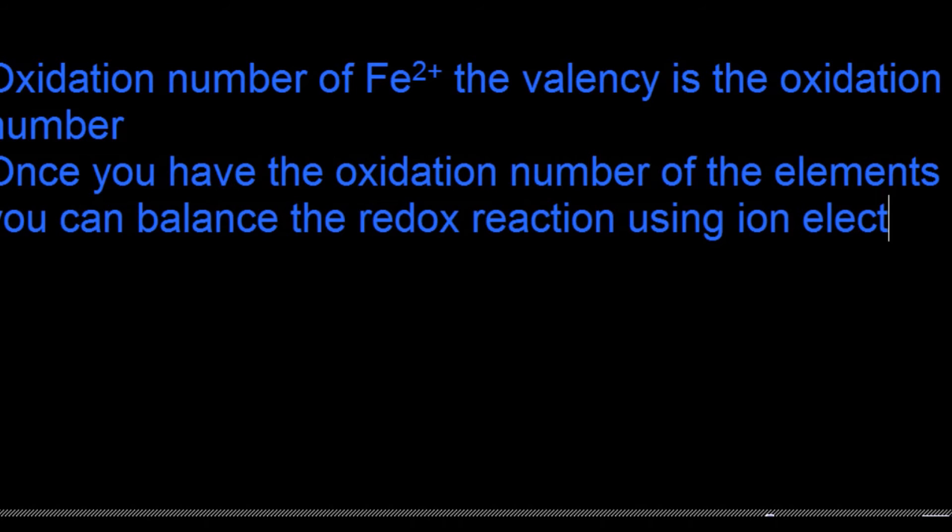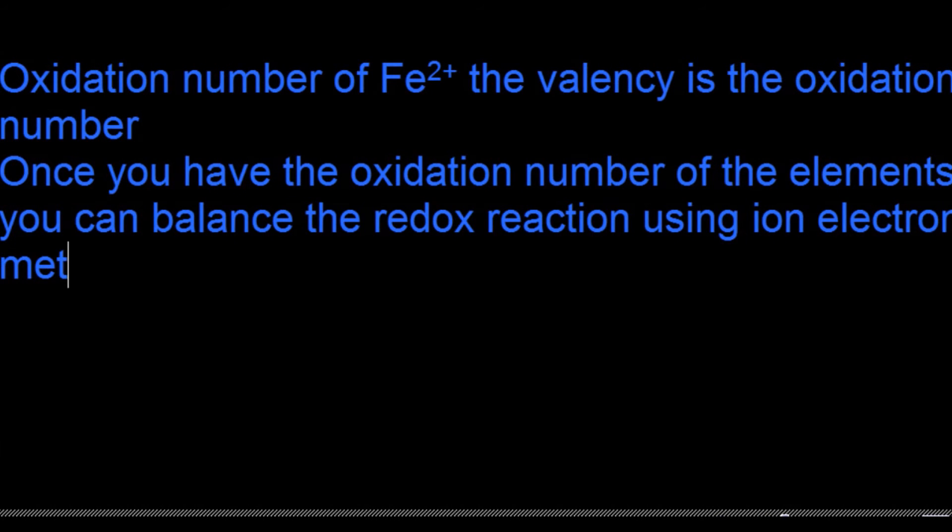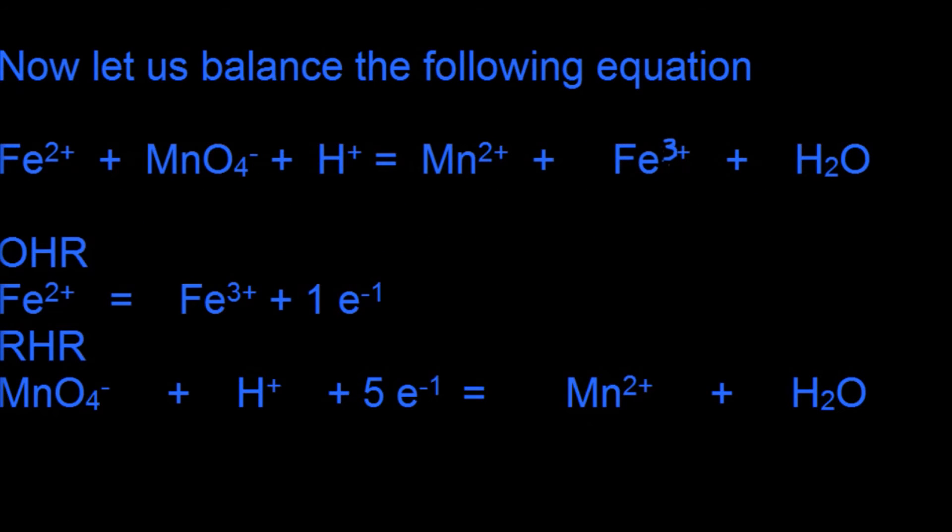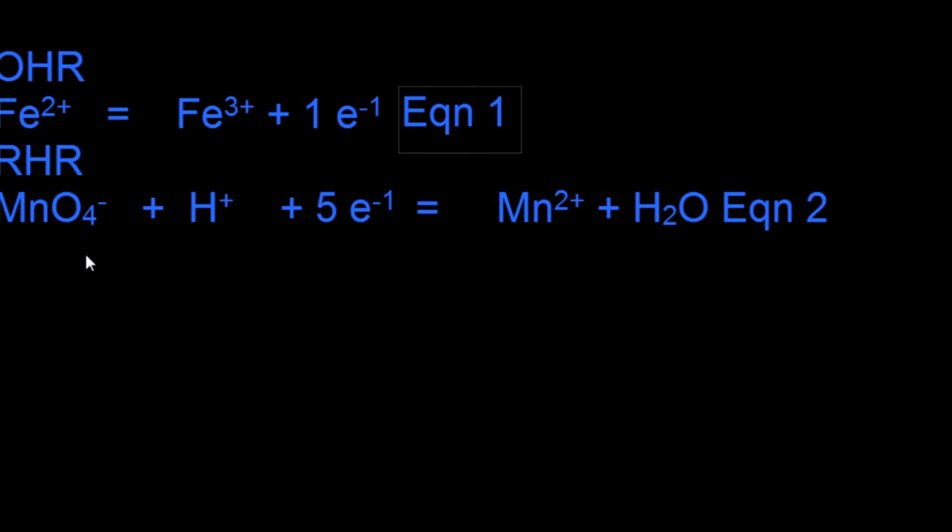Fe2+ changes into Fe3+, so that would be the oxidation half reaction. Mn in MnO4- will change to Mn2+, therefore the oxidation number changes from +7 in manganese to +2 in Mn, so that's the reduction half reaction.